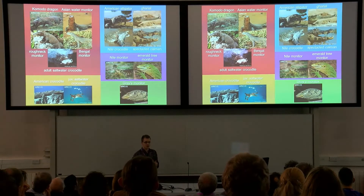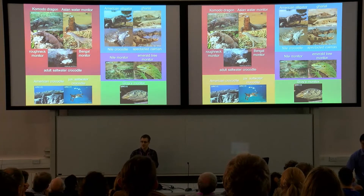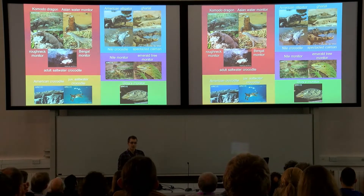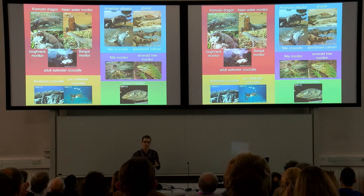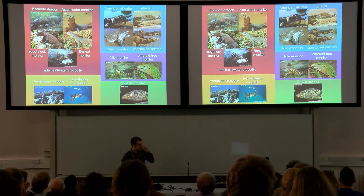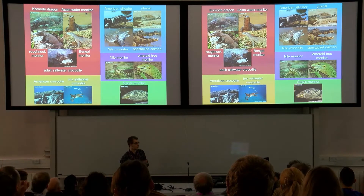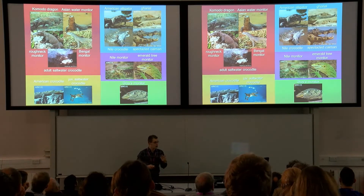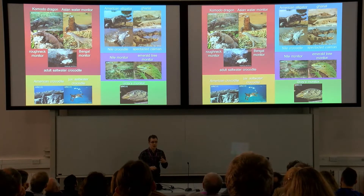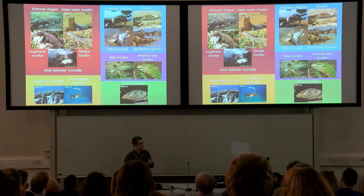Pterosaurs are a little bit more problematic, because they have no modern descendants. Thus, it can be argued that no single group of modern animals could serve as a fully representative proxy. For my PhD, I've looked at a suite of crocodilians and modern lizards who have different diets, as inferred from stomach content studies, and I've assigned them into one of five different dietary guilds.